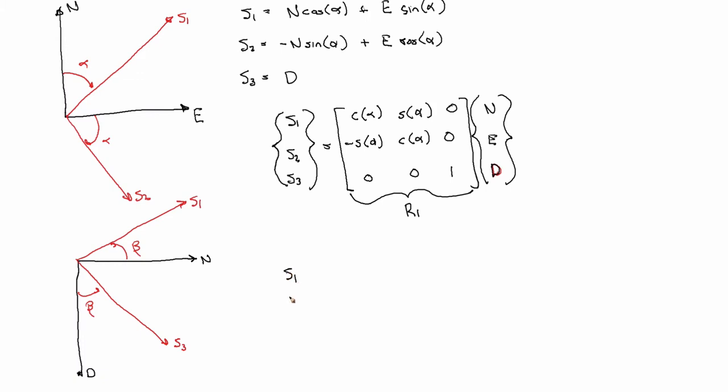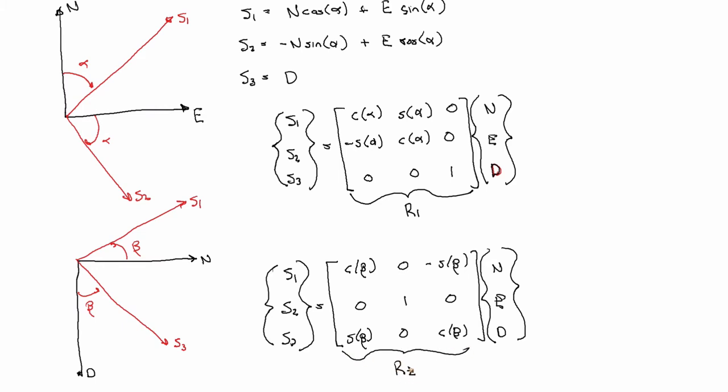We can write the equations just like we did before up there. I'm just going to go ahead and skip the step and write them in matrix form. So we have there S1, S2, S3 is equal to cosine beta zero minus sine beta, zero one zero, sine beta, cosine beta, north, east, down. And this guy we're going to call R2.